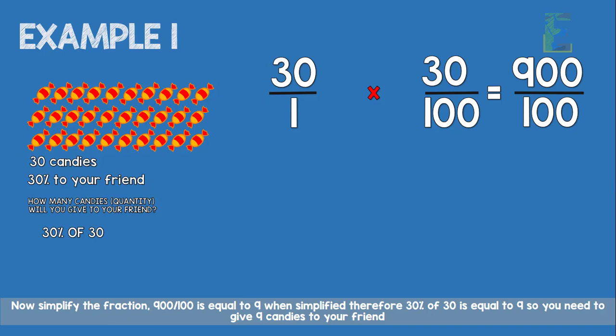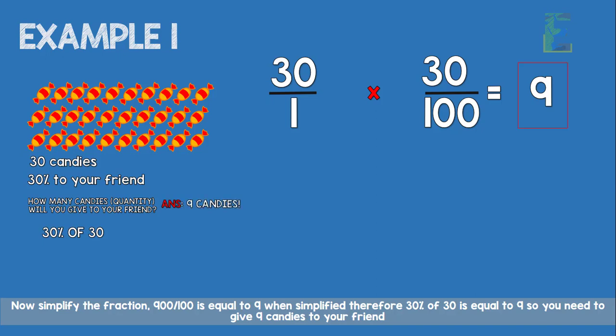Now simplify the fraction. 900 over 100 is equal to 9 when simplified. Therefore, 30% of 30 is equal to 9. So you need to give 9 candies to your friend.